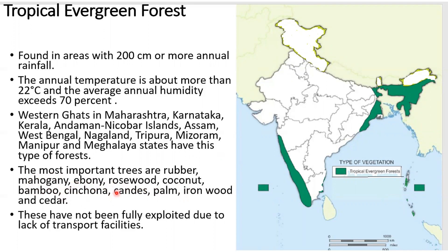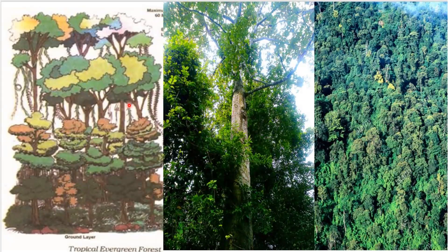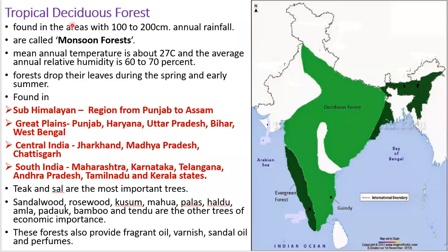We make a medicine that kills malaria from cinchona, which is called quinine. Other trees include candus, palm, ironwood, and cedar. These forests have not been fully exploited due to lack of transport facilities, because they have a very thick and dense canopy, and trees of the same kind do not grow near each other, making commercial exploitation very difficult.